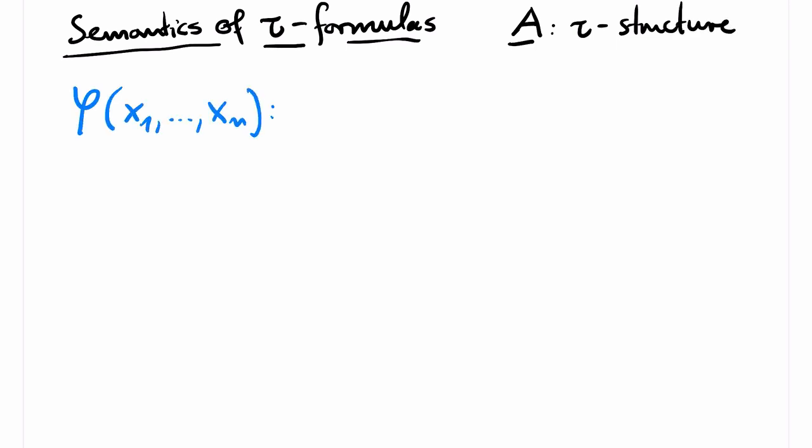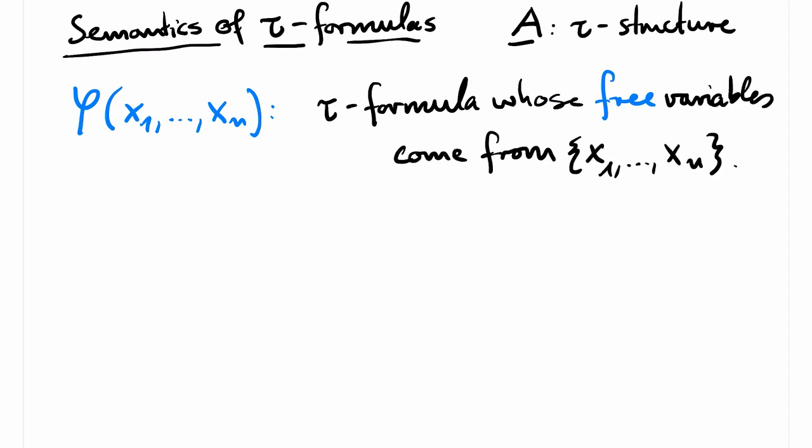We now define the semantics of tau formulas. Again, this is relative to some tau structure. Let's call it A. We write phi x1 up to xn for a tau formula where all the free variables in phi come from x1 up to xn. Now I have to define what free variables are. Formally, this can be done by induction over the inductive definition of phi, but let me instead illustrate the idea with an example.